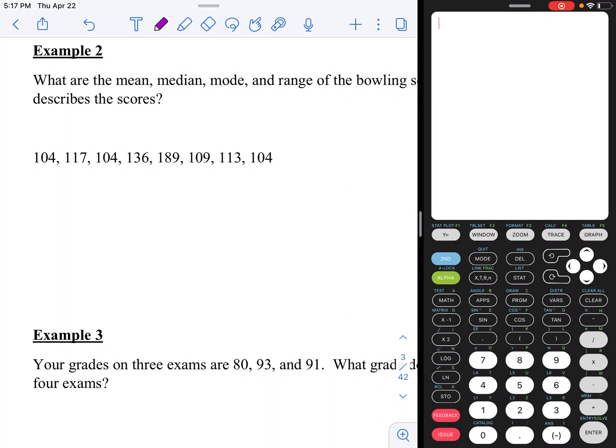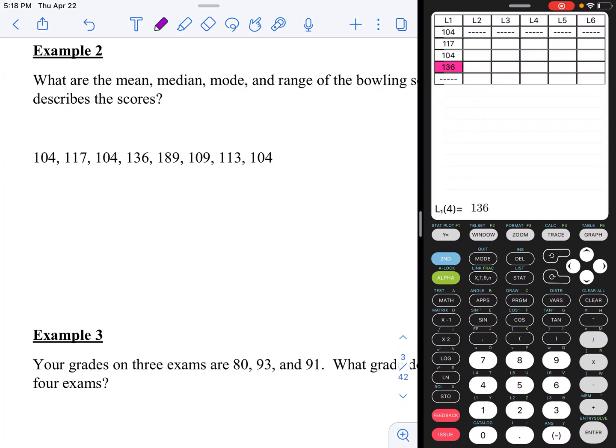So I am going to go ahead and hit the stat button on my graphing calculator which is below the delete button, next to the X button in the third row from the top. Right away you are going to click that first option edit and you are going to edit your row of data and put in the new pieces.